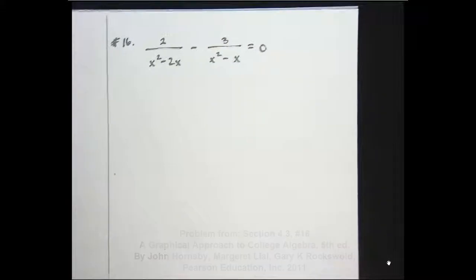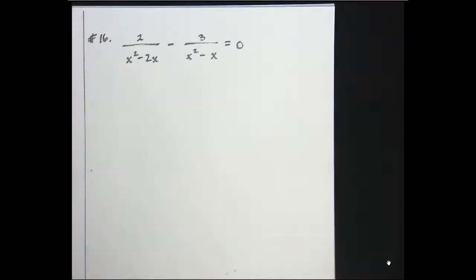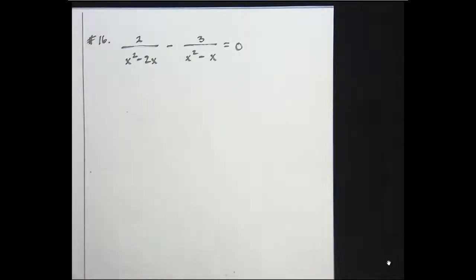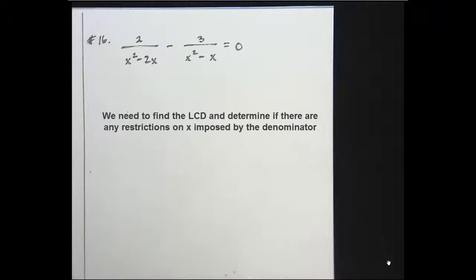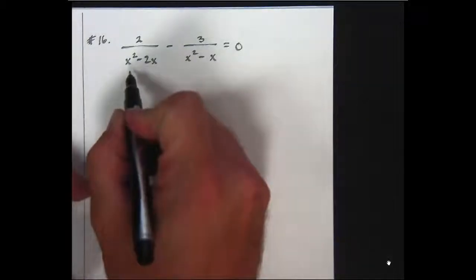When you're solving a rational equation, one of the first things you want to do is figure out what the LCD is by factoring all the denominators, and you also then want to figure out if there are any restrictions on x, values that x cannot equal.